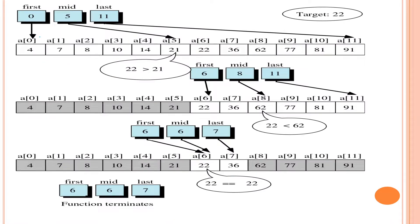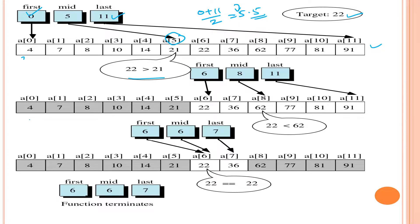Here is an example. First we calculate the middle element: first index is 0, last index is 11, so 0 plus 11 divided by 2 equals 5.5, and floor value is 5. We omit the fractional part, so middle element is at the 5th location. We compare the target value, which is 22. Since 22 is greater than 21, the middle element is lower than the searching value, so we eliminate the first half of the array.